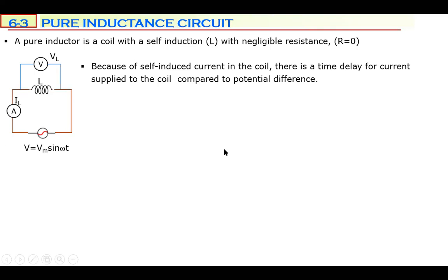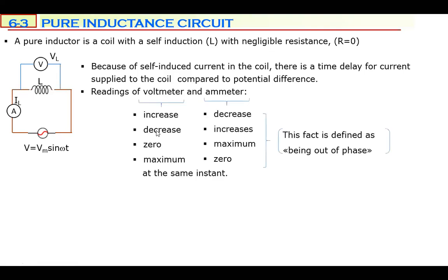Because of self-induction, there is a time delay for the current supplied to the coil compared to the potential difference. When the generator provides maximum potential difference to the coil, the coil reacts to the electric current — so electric current cannot be maximum when potential difference is maximum. For this reason, the voltmeter and ammeter readings change oppositely in a coil.